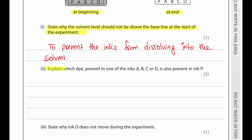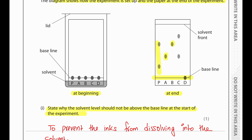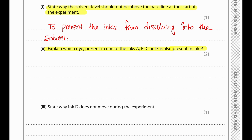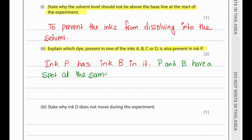Explain which dye present in one of the inks A, B, C, or D is also present in ink P. We can see P contains the same level as that of B. P and B have a spot at the same height, which means they have the same dye.